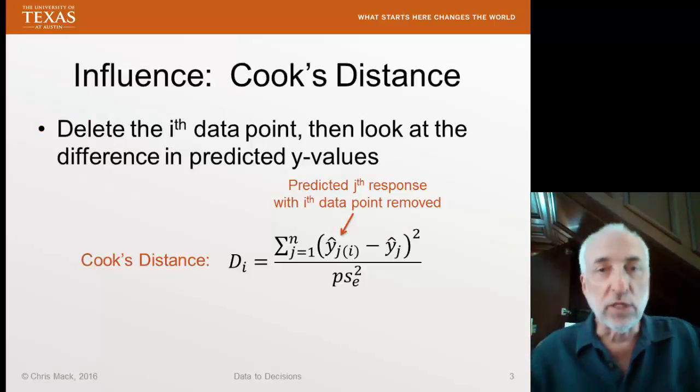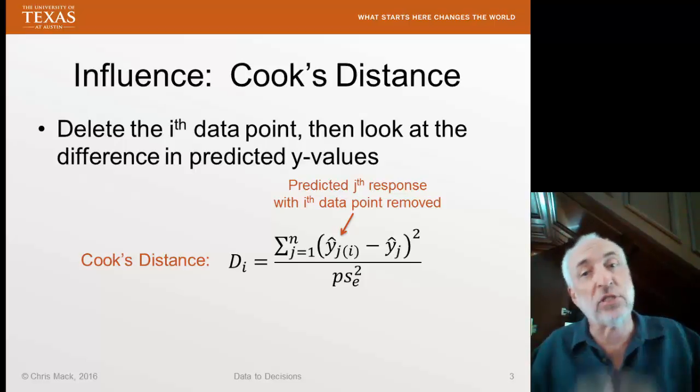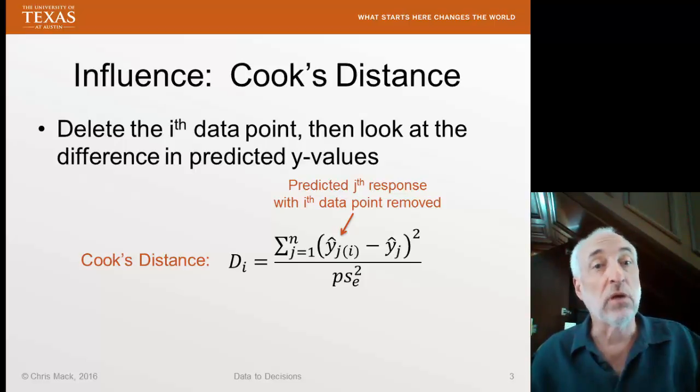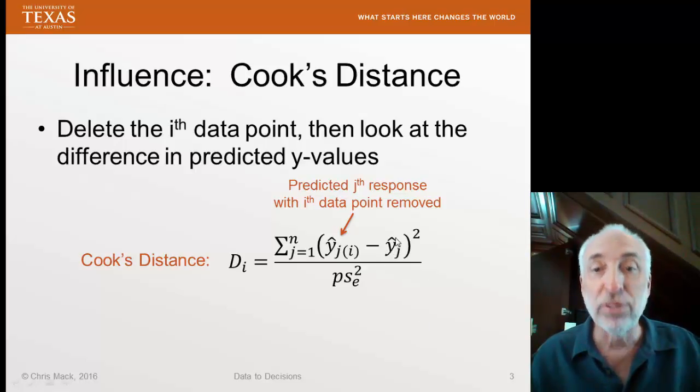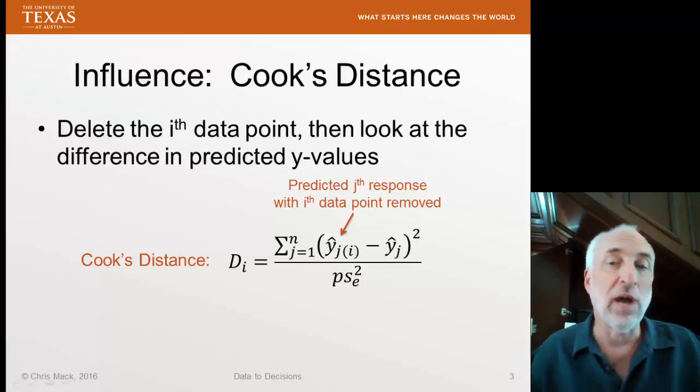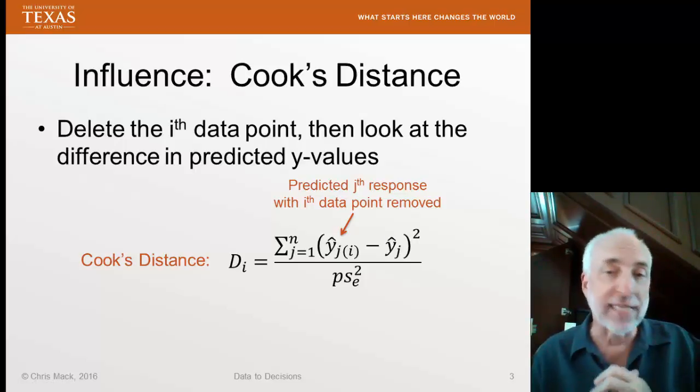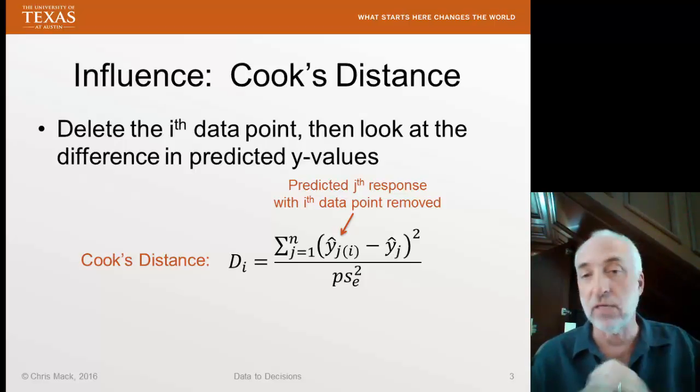The definition of an influential data point is one where removing that data point substantially changes the results of our regression. We're going to talk about what substantial means as we go along, and also there's more than one result of a regression, and we'll talk about different results as well.